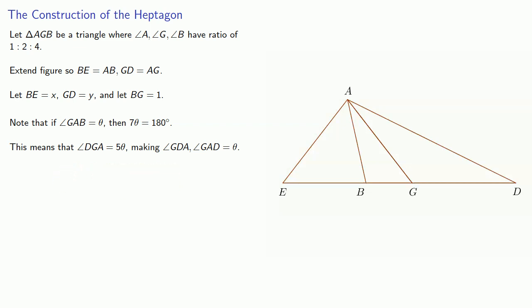Also, angle ABE is 3 theta. And so that gives us angles BEA, BAE as 2 theta.